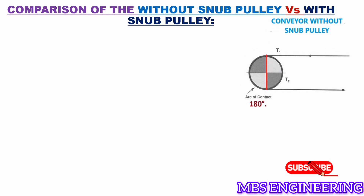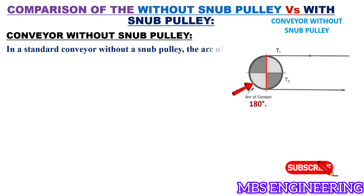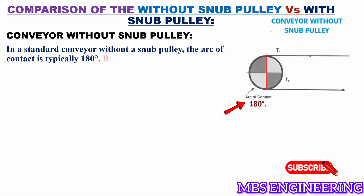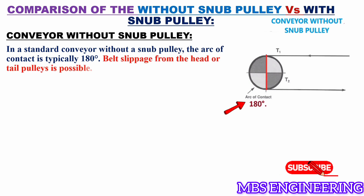First, we look at the conveyor without a snub pulley. In a standard conveyor without a snub pulley, the arc of contact is typically 180 degrees. Due to this lesser arc of contact, belt slippage from the head or tail pulleys is possible. Please refer to the picture for a better understanding.